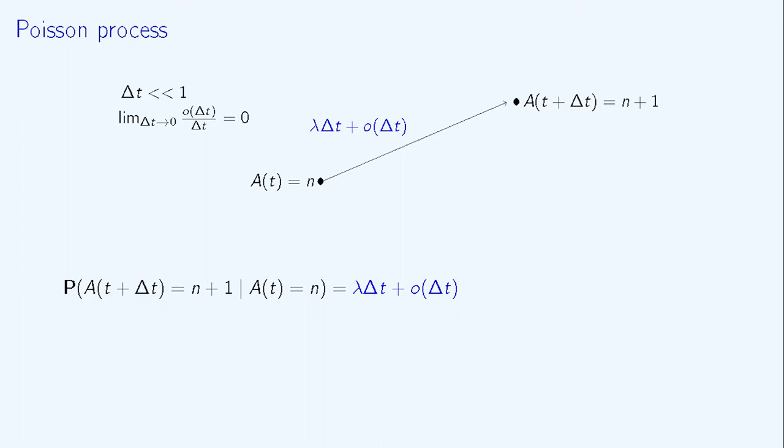Between time t and time t plus delta t, there can be zero customer arrivals or one customer arrival. The probability that one client arrives between t and t plus delta t is equal to lambda delta t, where lambda is the rate of the Poisson process.